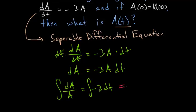So the left-hand side evaluates to the natural log of the absolute value of A, plus some constant. Though, when we integrate the right-hand side, we'll also get a constant, and we can essentially just combine them in the end to make one constant. So I'll just put the constant on the right-hand side. And integrating this expression, we have minus 3 times t, and then plus c.